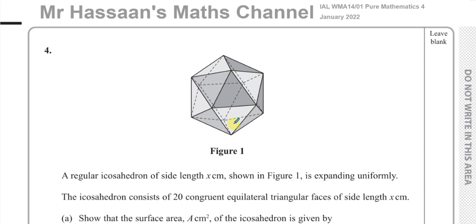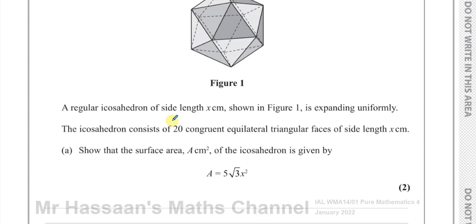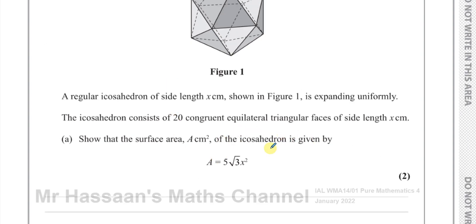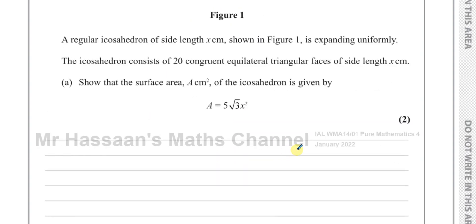The sides are variable but they are all the same length. The icosahedron consists of 20 congruent equilateral triangular faces of side length x centimetres. We first need to show that the surface area of the icosahedron is given by A equals 5 times root 3 times x squared. We have 20 equilateral triangles, all with side length x.